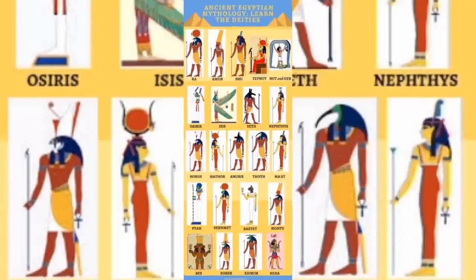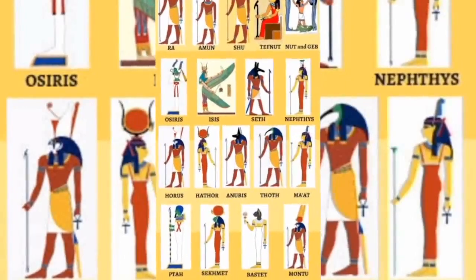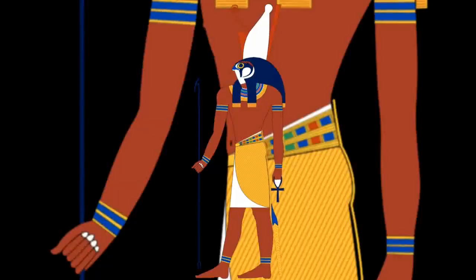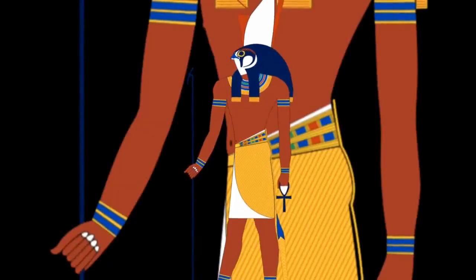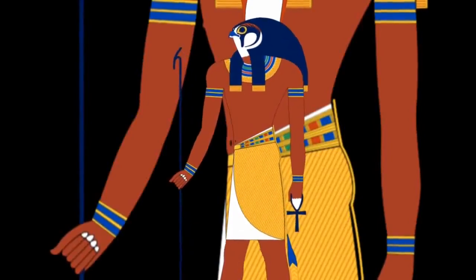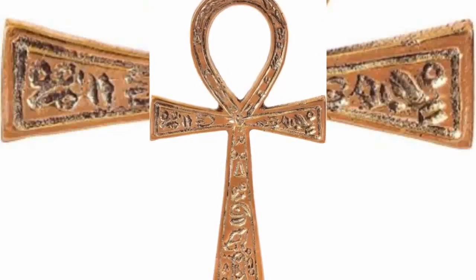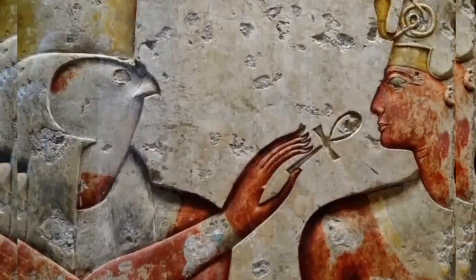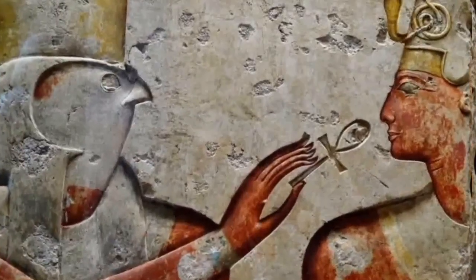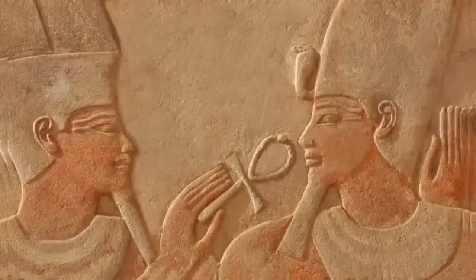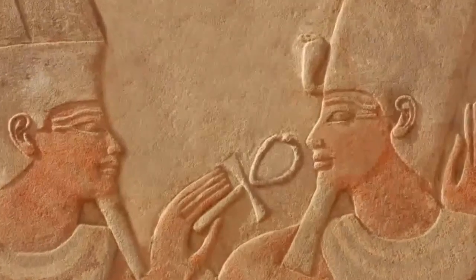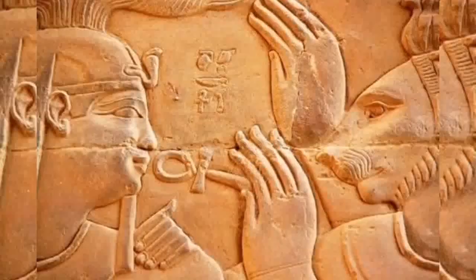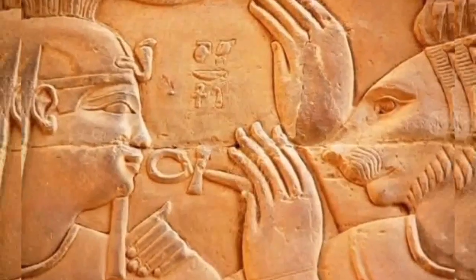Therefore, the ankh was frequently depicted being held in gods' hands, representing their life-giving power. The Egyptians also believed that when they died, their individual lives could be renewed in the same manner as life in general. For this reason, the gods were often depicted in tombs giving ankh signs to humans, usually the pharaoh. As the sign represented the power to bestow life, humans other than the pharaoh were rarely shown receiving or holding the ankh before the end of the Middle Kingdom, although this convention weakened thereafter.